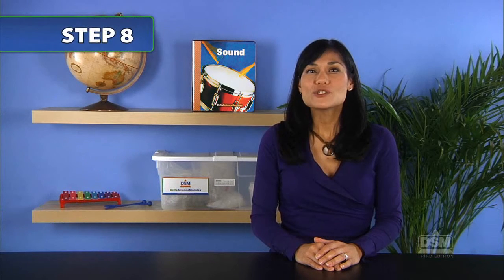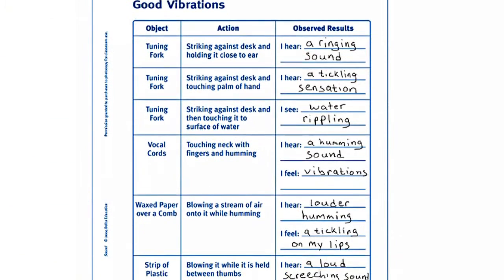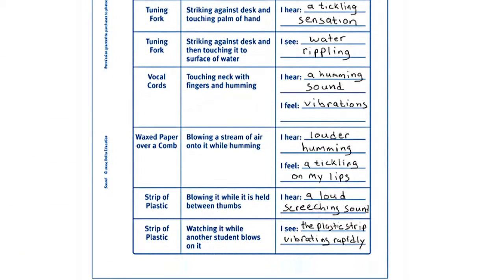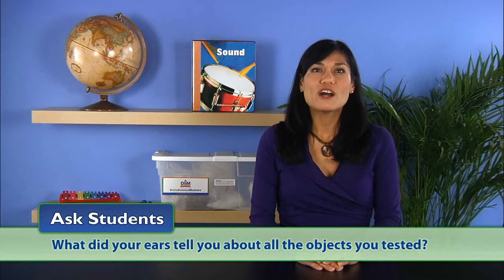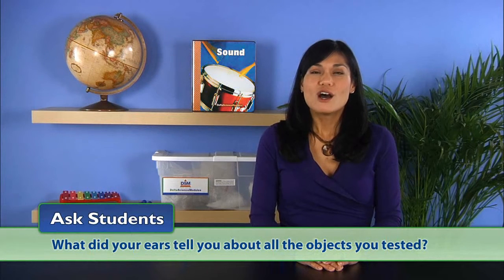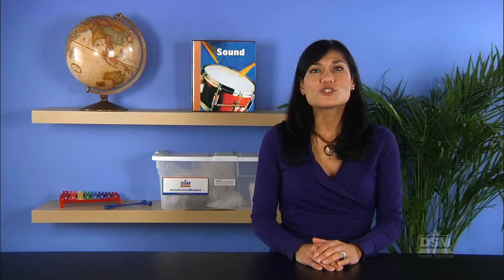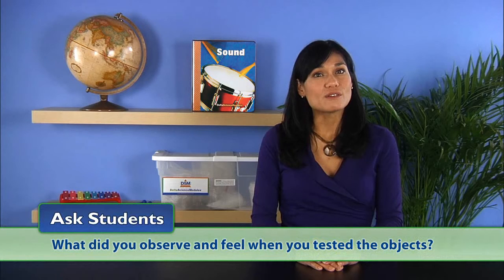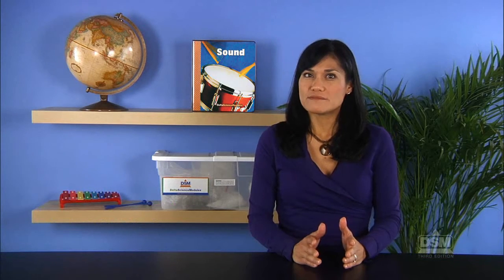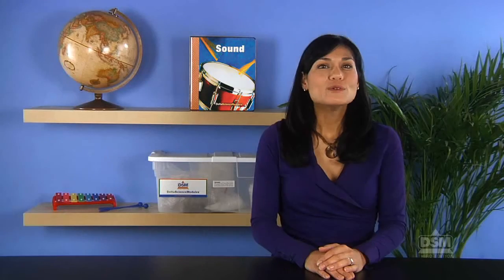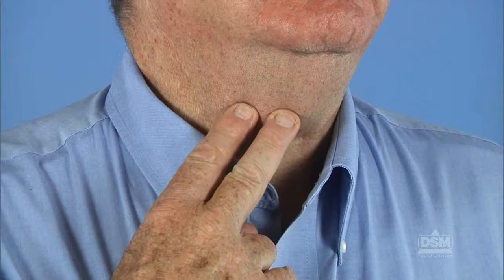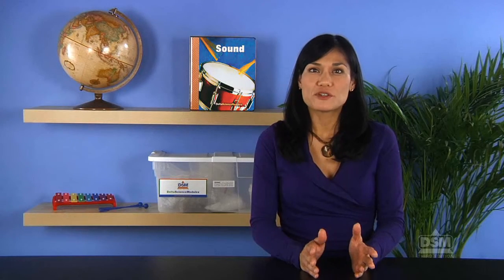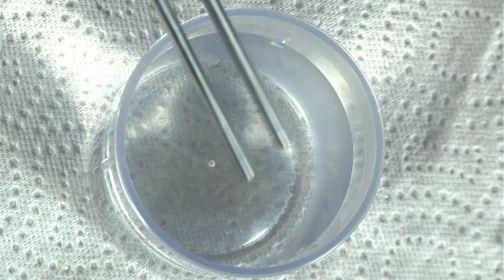Finally, have the students review all of the observations they recorded on the activity sheet. Ask what their ears told them about all the objects they tested. All the objects could be used to produce sound. Then ask what they observed and felt when they tested the objects. Some objects could be seen to vibrate, such as the plastic strip. Vocal chord vibrations could be felt but not seen. Some objects showed they were vibrating by affecting other materials, such as the tuning fork rippling water.